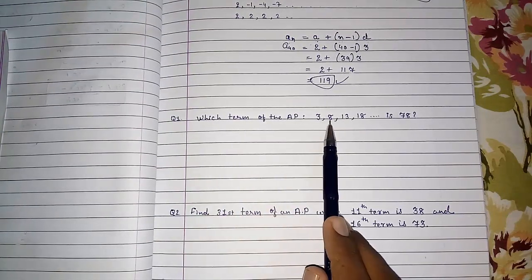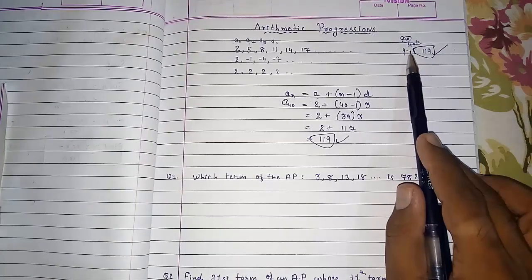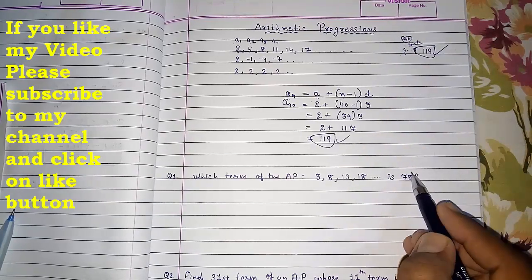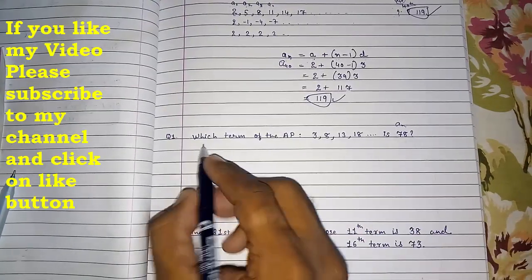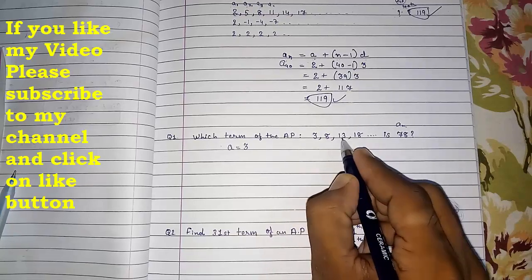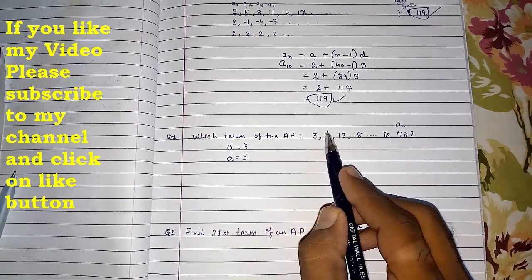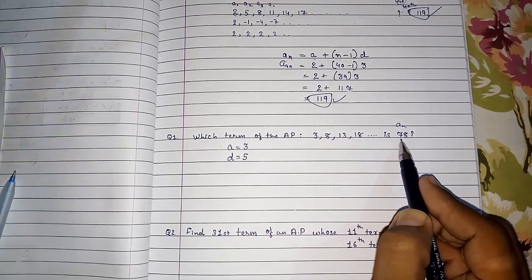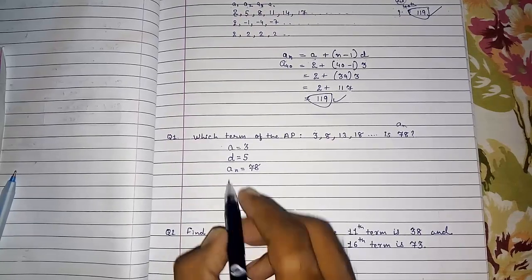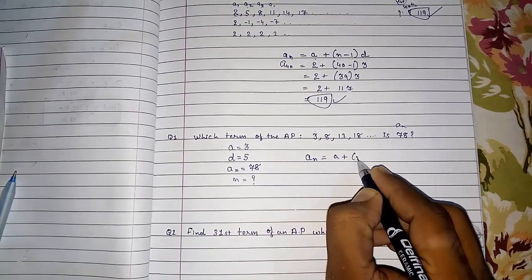Look here. I'm going to solve this sum. Which term of the AP 3, 8, 13, 18 is 78? Means they had given here, in the previous question they had not given this term. Here they had given that term. And we have to find this N. It was 40th term. We have to find which term is this. Means AN. So from this first we will make a list. First number that is A. Difference, 8 minus 3, 5 or 13 minus 8, that is also 5. 18 minus 13, that is also 5. So difference is 5. N, that we want to find. Because this is A1, A2, A3, A4 and somewhere which term is this. So we want to find N. And 78 will be our AN. AN will be 78. And N that will be question mark.